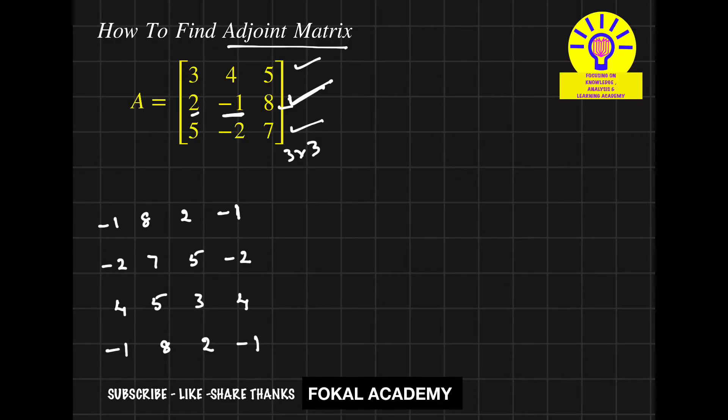Now here apply determinant for this 2x2 matrix. We will get minus 7 plus 16, nothing but 9. And similarly, determinant for this 2x2 matrix we will get 26. And similarly do determinant for each 2x2 matrix.